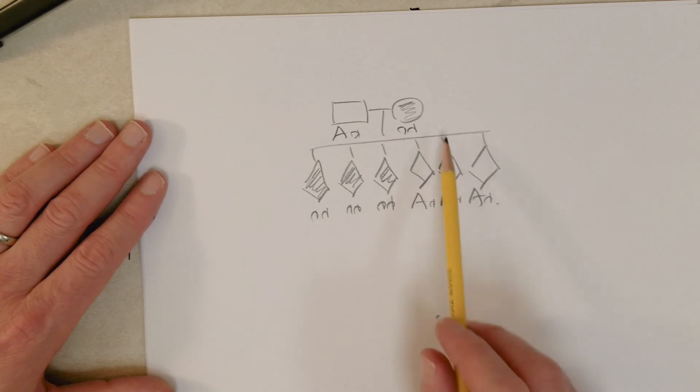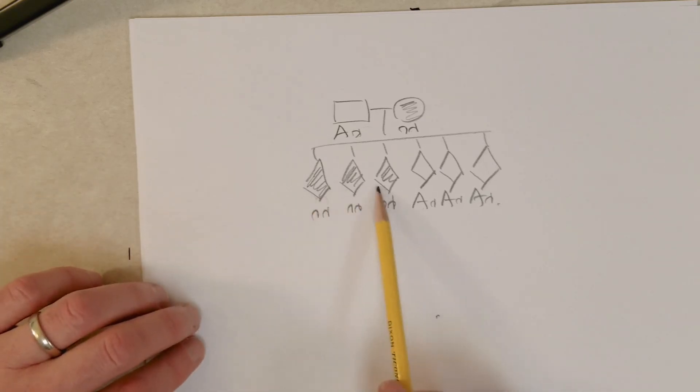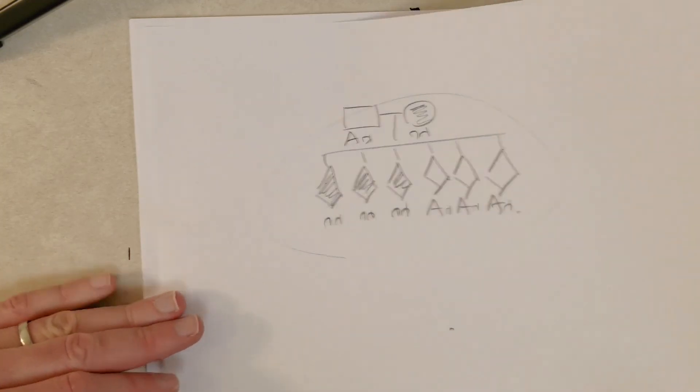So that is part C, and we can conclusively determine the genotypes of all these individuals here because at least one albino - in fact three - showed up. Because albinism showed up in the next generation. Okay, so hopefully those are straightforward and rather easy.